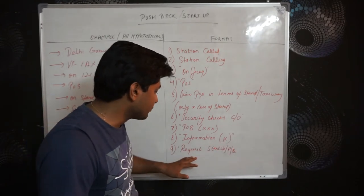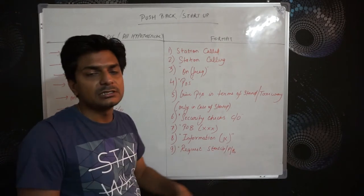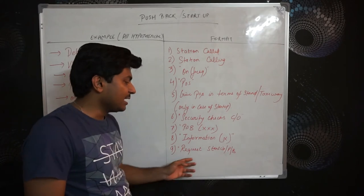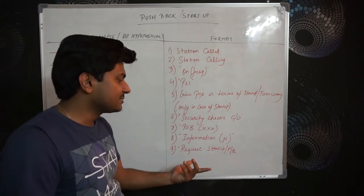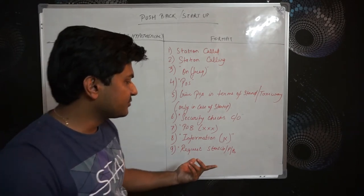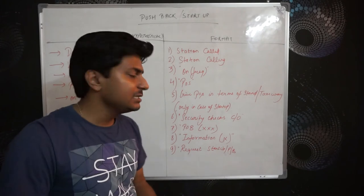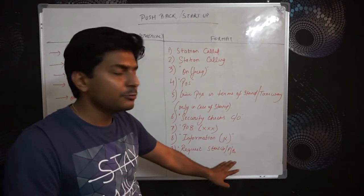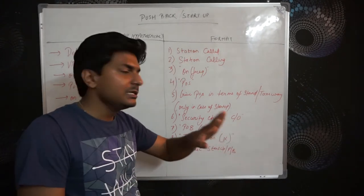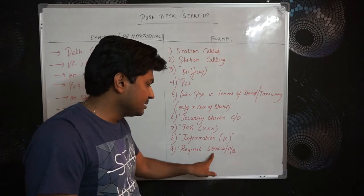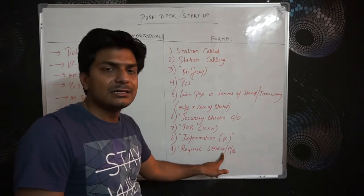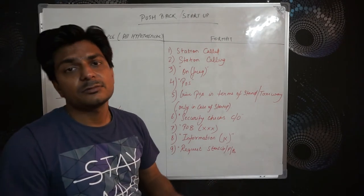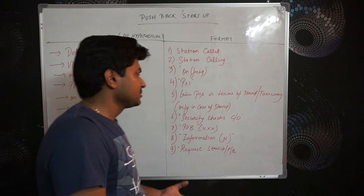After the ATIS information, you request startup or pushback as per your condition. The format is the same for both — the only difference is at the end of your transmission you say either 'request startup' or 'request pushback.'